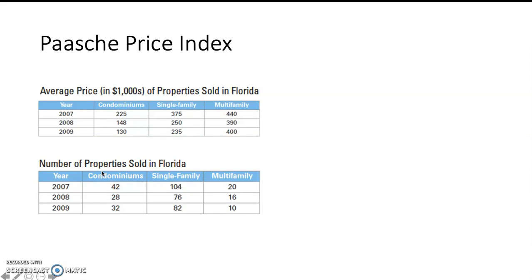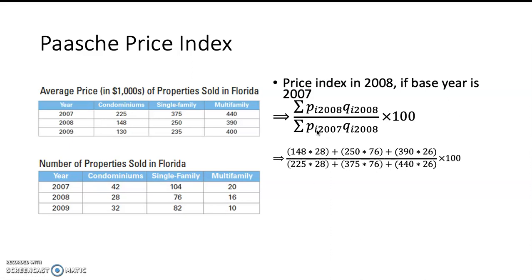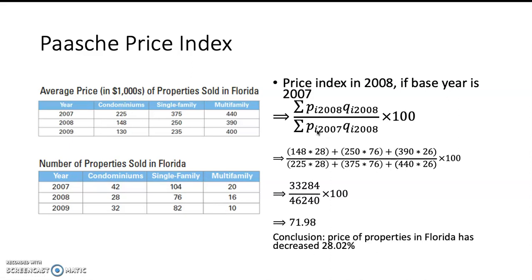Now let's calculate the price index using the Paasche formula. The Paasche formula uses the current quantity as the weight, so if we want to calculate the price index in 2008, we use the quantity of 2008 as the weight, with prices in 2008 and 2007 as the base year. The result is 71.98, meaning the price of property based on the Paasche Price Index decreased less — only 28.02% — compared to Laspeyres, which showed a 30.11% decrease.